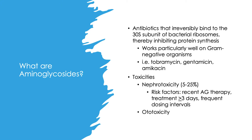Aminoglycosides are antibiotics that irreversibly bind to the 30S subunit of the bacterial ribosome, thus inhibiting protein synthesis. They work particularly well against gram-negative organisms but have very little activity against gram-positive organisms, as they typically require another antibiotic for a synergistic effect. They don't work against anaerobes either, since their uptake is energy-dependent and requires oxygen. Examples include tobramycin, gentamicin, and amikacin, among others.